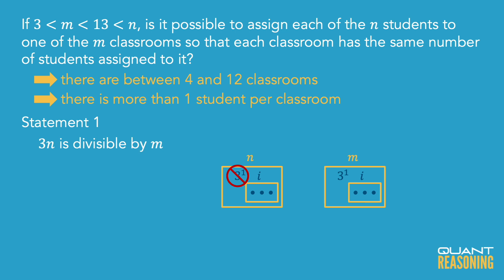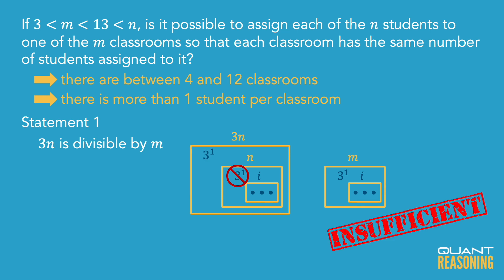Statement 1 is not sufficient on its own, and we can eliminate the answer choices that claim that it is. So A and D are gone, and we're down to B, C, or E. Statement 2 seems really similar to statement 1. The only difference is that now, instead of an extra factor of 3, we have an extra factor of 13. So we have to repeat that same thought process, but this time with an extra factor of 13.